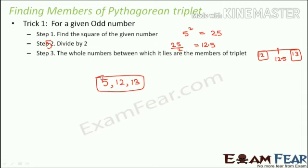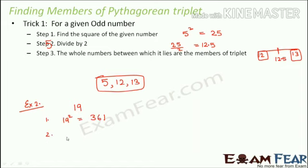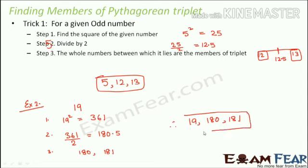Let's take one more example. Given the number 19 — which is odd — let's follow the steps. Step one: 19² = 361. Step two: 361 ÷ 2 = 180.5. Step three: 180.5 is located between the whole numbers 180 and 181. Therefore, 19, 180, 181 form the Pythagorean triplet, and 180 and 181 are the other two members.